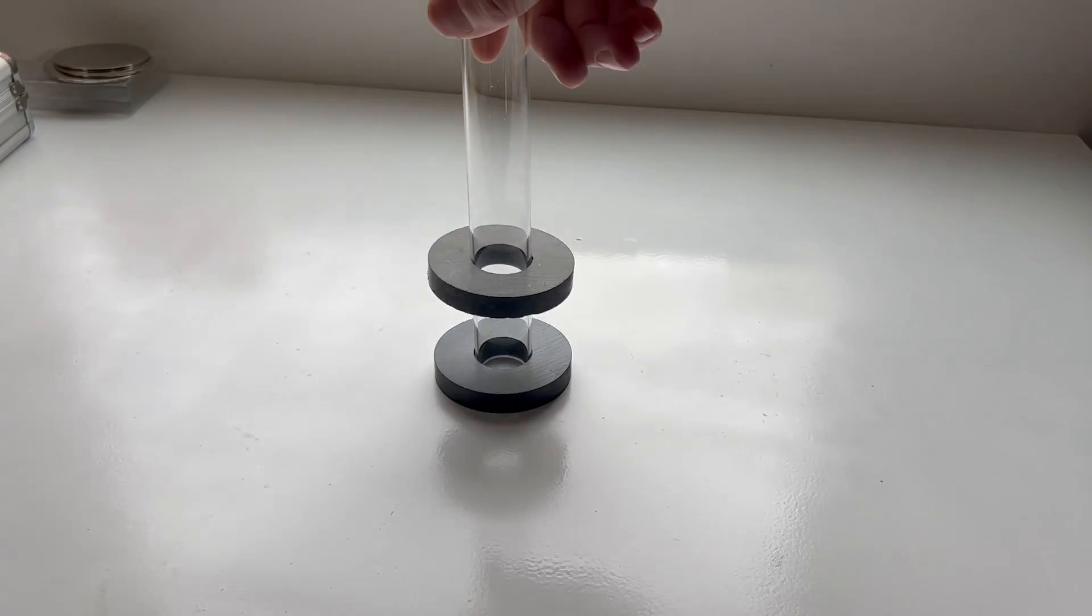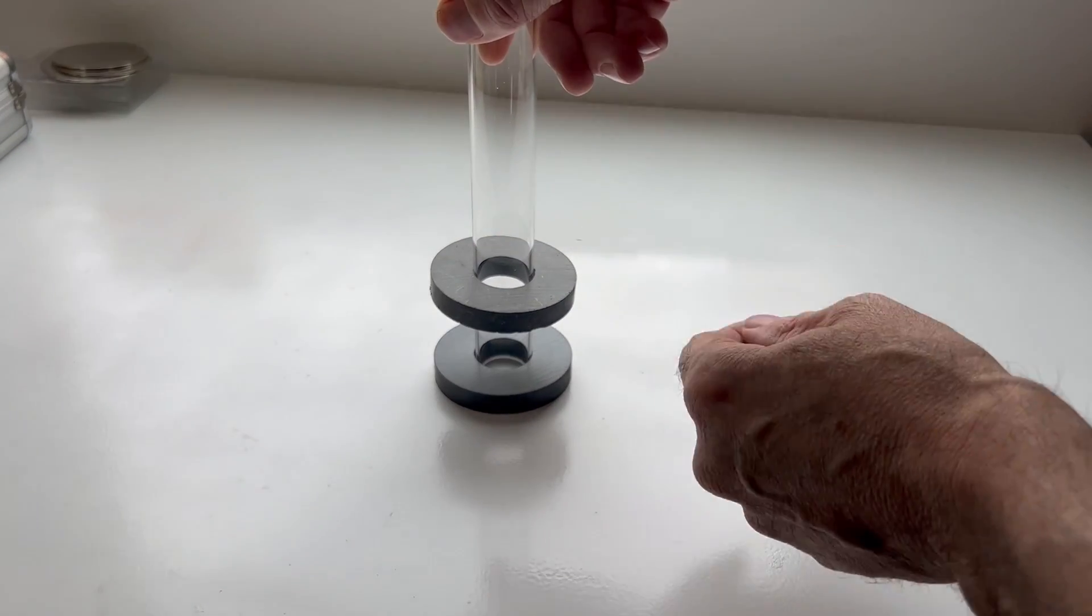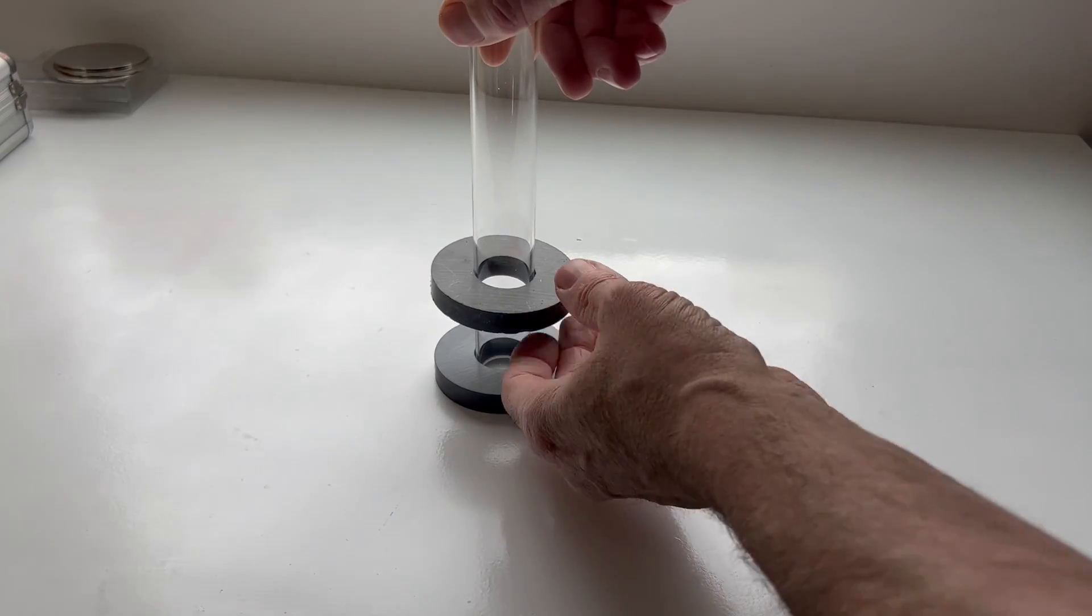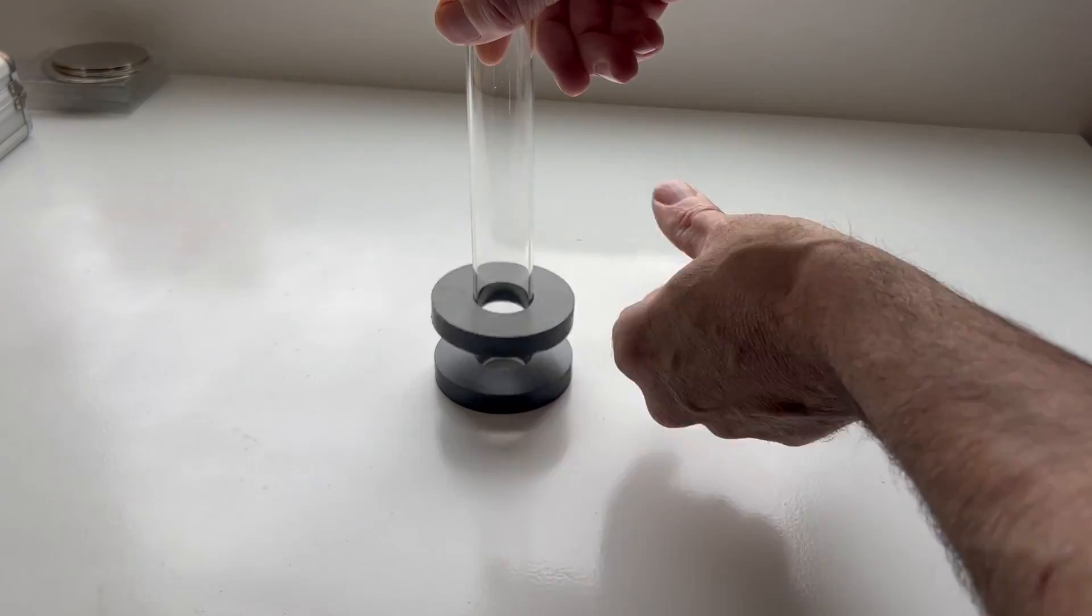And of course when I put that magnet down on top of the other one, the tube stabilizes the magnet—it can't go off to the side. And we get this effect that the magnet looks like it's floating above the other one.